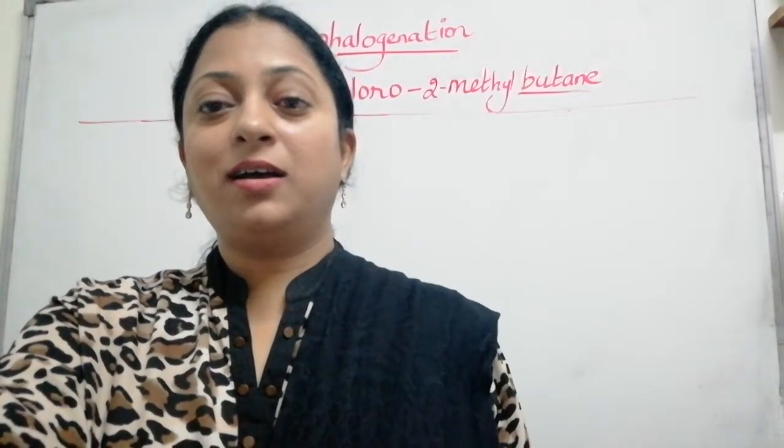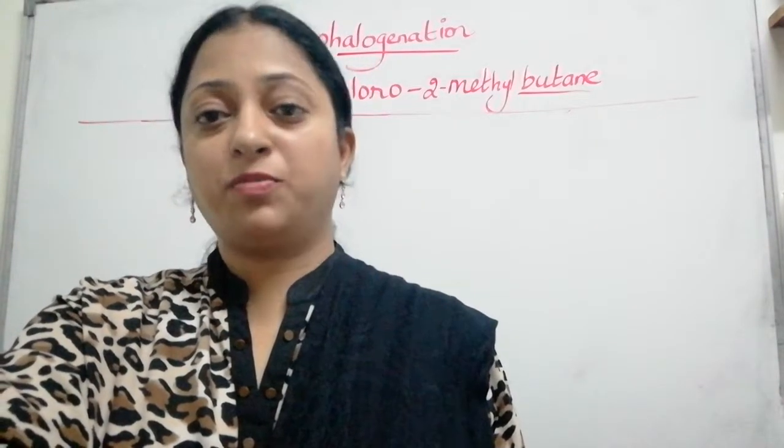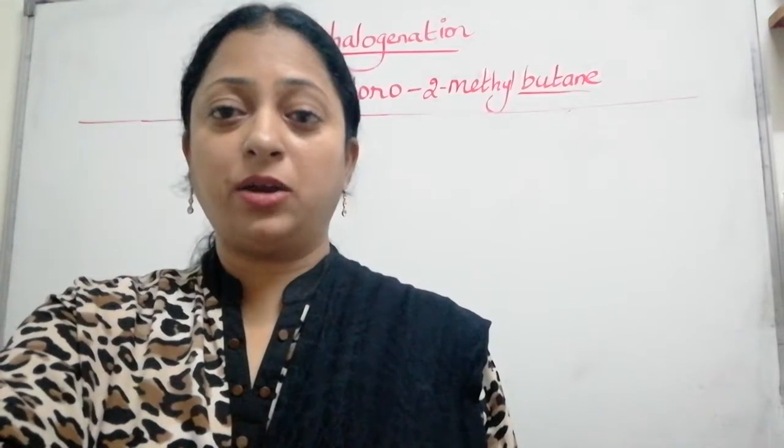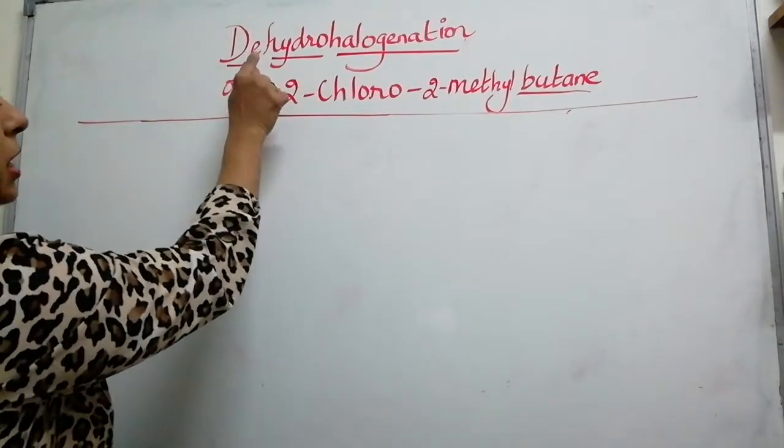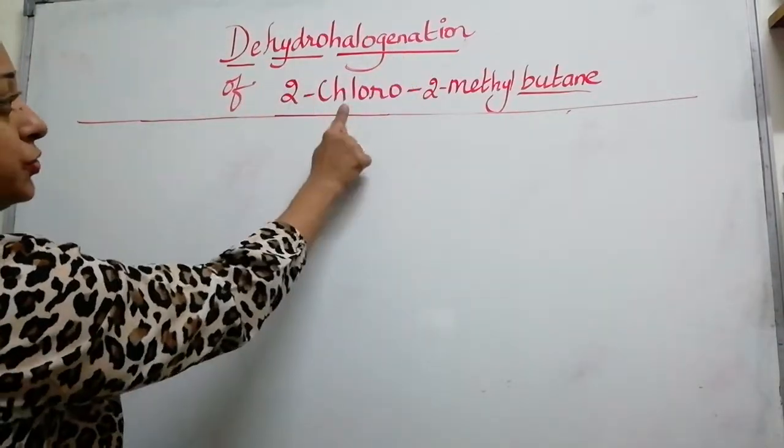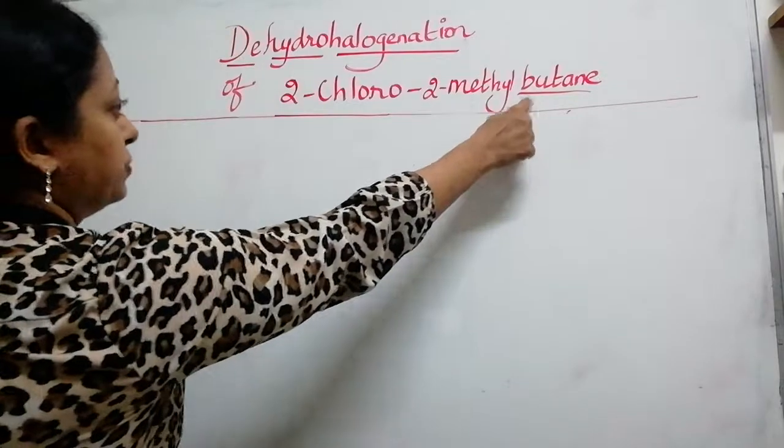Hi students, today we are going to solve the textbook question of haloalkanes and haloarenes. So look at this example. We need to do dehydrohalogenation of 2-chloro-2-methylbutane.